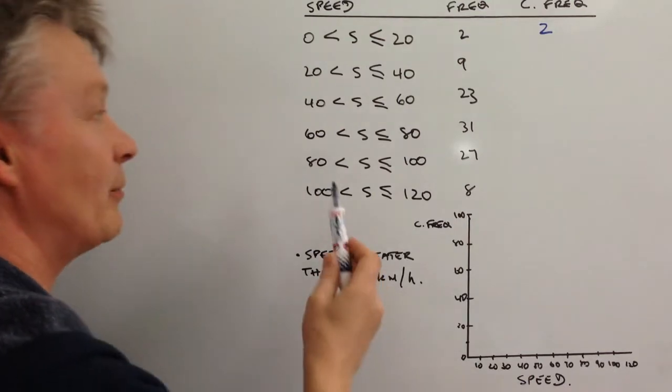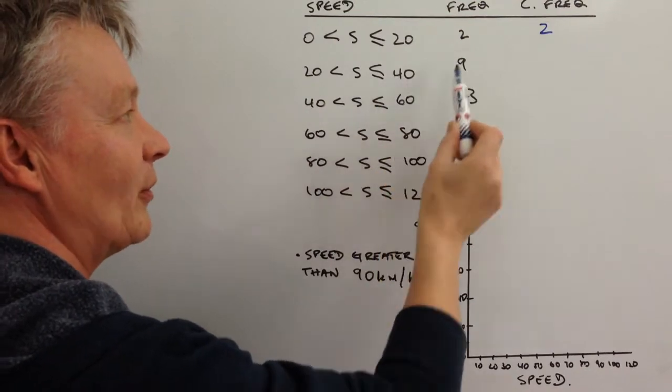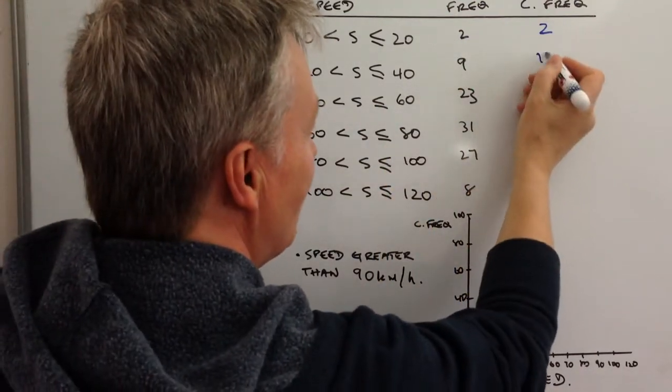The second group is going to be the cumulative frequency of between zero and 40. Well, that's going to be nine plus two is 11.